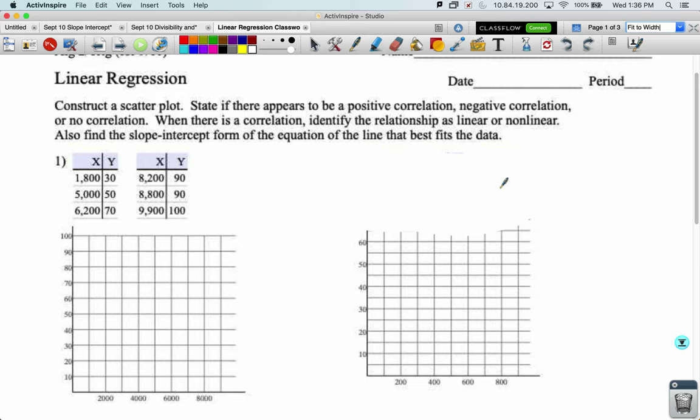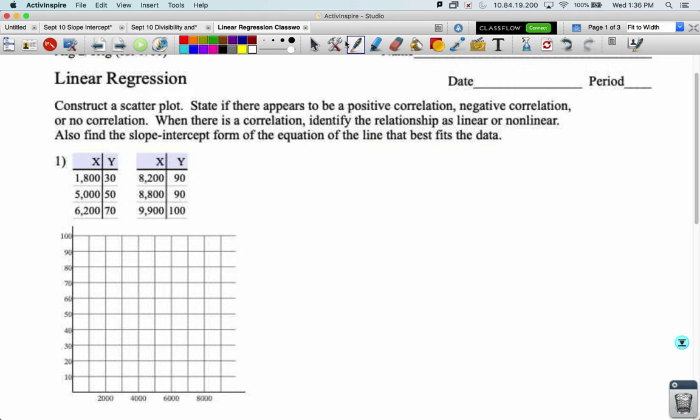I'm going to block out from two here so I've got some space to write. Let's read the directions. For number one, it says construct a scatterplot. State if there appears to be a positive correlation, negative correlation, or no correlation. So let's talk about what that would look like. A positive correlation is when the dots on our scatterplot make a well-formed line and that line has a positive slope. Something like that, so that we can pass a line through those dots, get relatively close to all of them, and that line would have a positive slope.